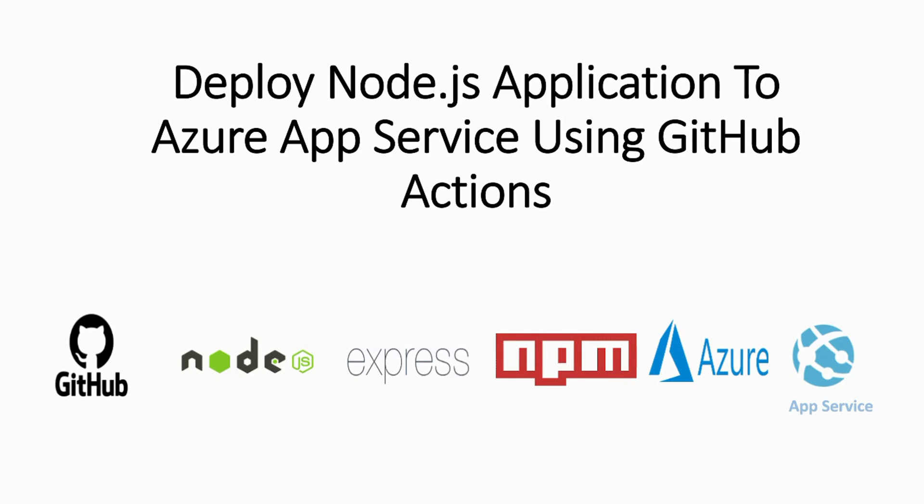Hello everyone and welcome back to Integration Ninjas. In today's tutorial we are going to dive into the world of deployment and explore how to deploy a Node.js application to Azure App Service using GitHub Actions. It will be built with Express. This process is incredibly powerful, allowing you to automate the deployment of your applications with ease. Azure App Service provides a scalable and managed platform for hosting your web applications, and GitHub Actions allows you to set up a streamlined CI/CD solution.